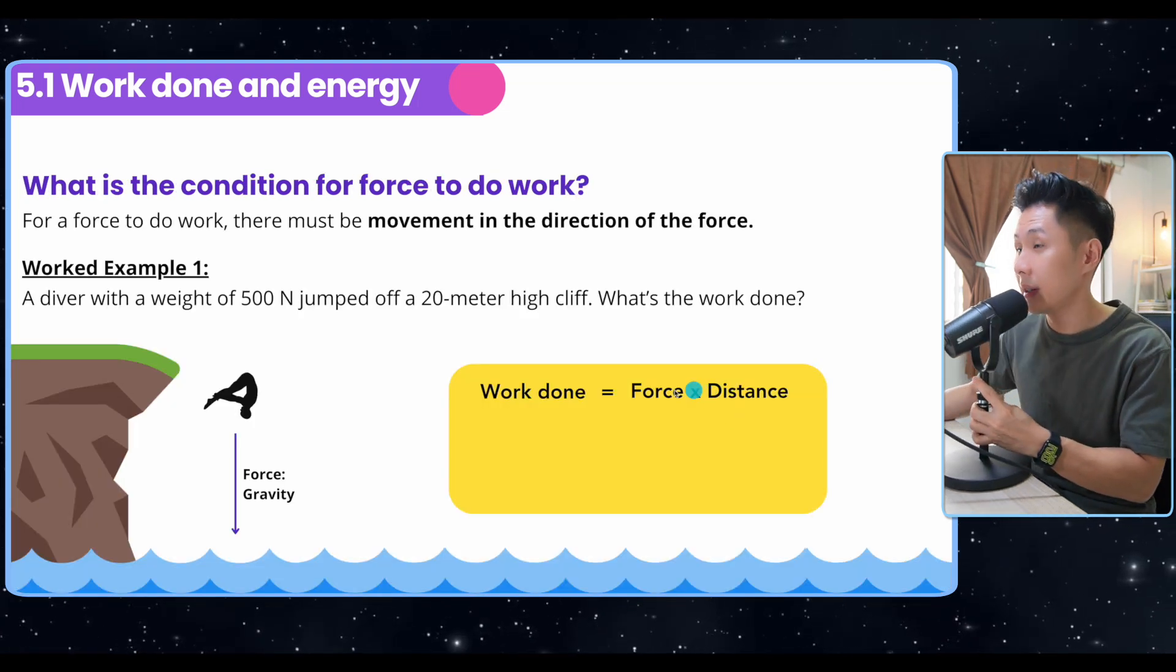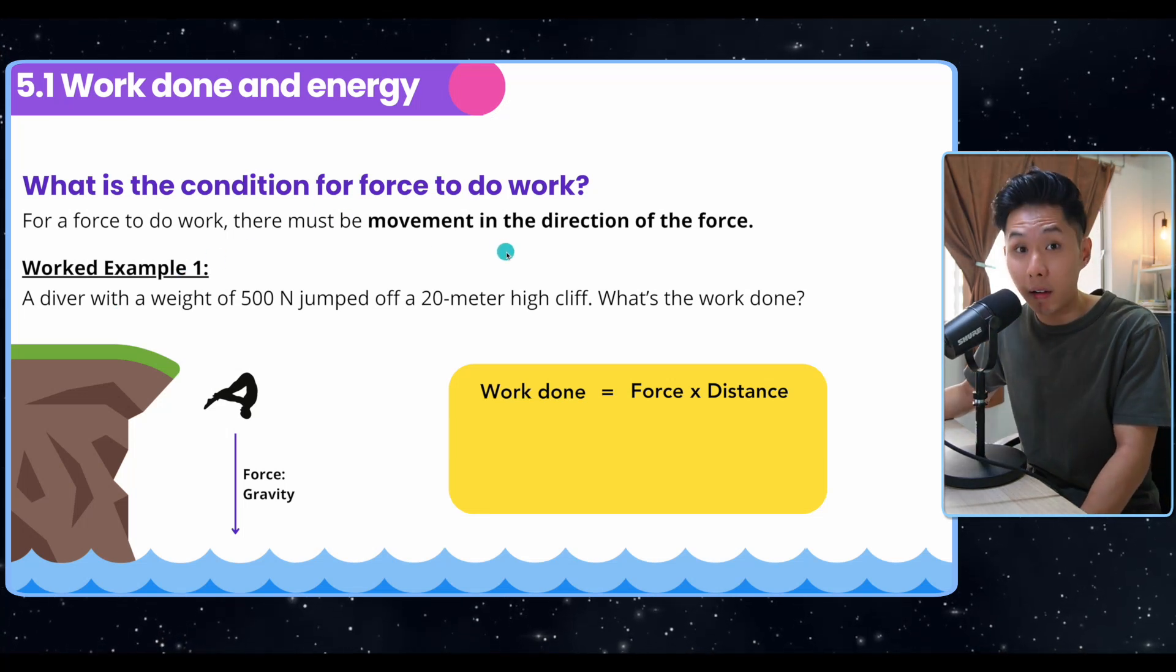So to break it down even further, one joule is the amount of work done when a force of one Newton is applied over a distance of one meter. So let's have some questions. For a force to do work, there must be movement in the direction of the force.